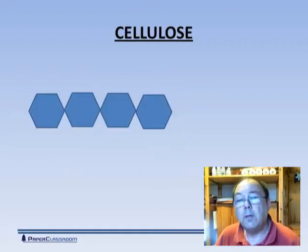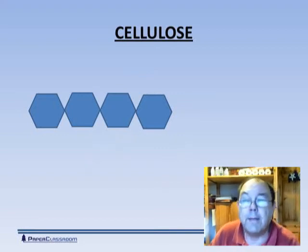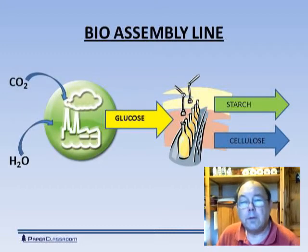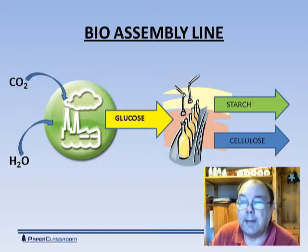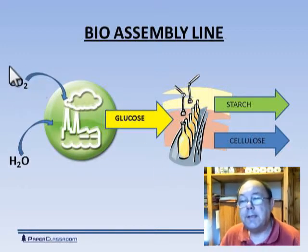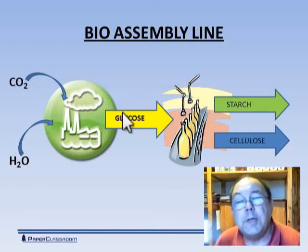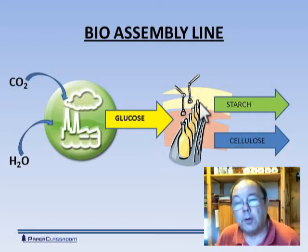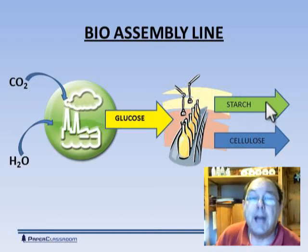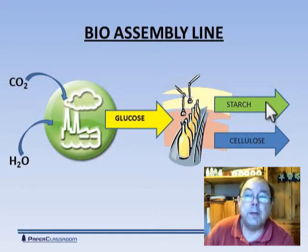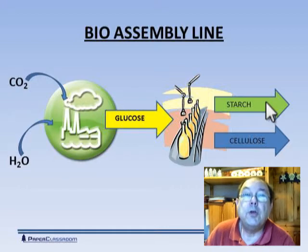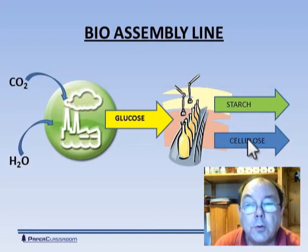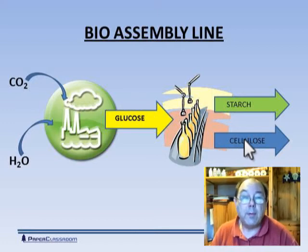Why is glucose an essential building block? Because the plant joins all the glucose molecules together and produces cellulose, and it's cellulose that we papermakers use to make our paper. The plant is rather like a little bio assembly line: one part takes in raw materials — carbon dioxide and water — producing glucose molecules. If it assembles them one way it produces starch, the energy reserve stored in leaves and sometimes in bulbous tubers like the potato. Another way it assembles glucose molecules is to produce cellulose — the stuff papermakers really need.